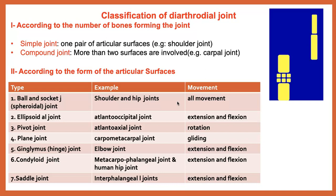According to the form of the articular surfaces, we have different types and associated movements. For example, in the shoulder joint and hip joint, we have the ball and socket joint, which can perform all movements: extension, flexion, abduction, adduction, circumduction, and rotation.